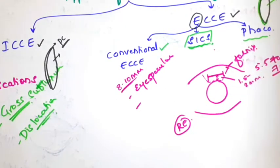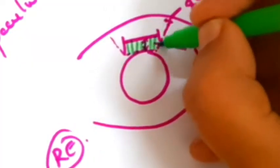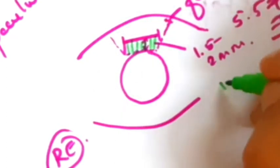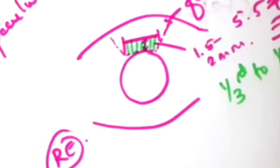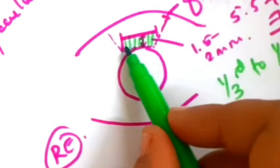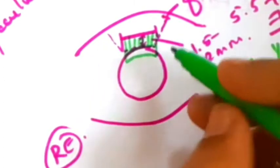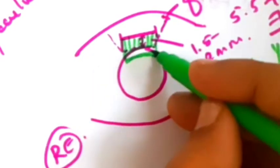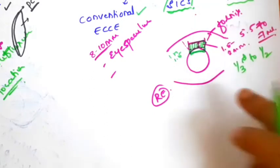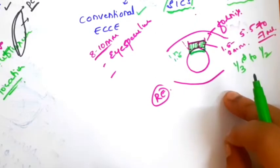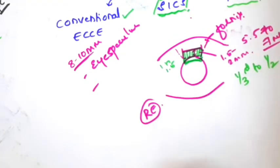Followed by making the tunnel — we are creating a groove in the layers of the sclera. The depth of the tunnel is 1.3 to 1.5 of the scleral thickness, and you create a groove, then enter the limbal area and continue with dissection into the cornea, going 1 to 1.5mm into the anterior surface of the cornea. The specialty of this tunnel is it is a self-sealing tunnel.